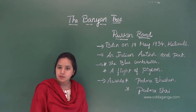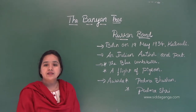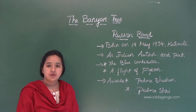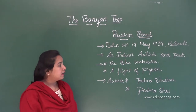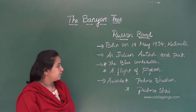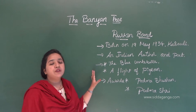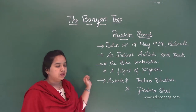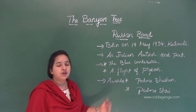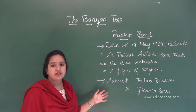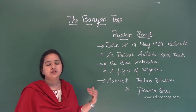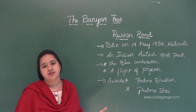Here I have written on the board. Ruskin Bond was born on 19th of May 1934 in Kasoli. He is an Indian author and poet. Here are some of his famous works: The Blue Umbrella and A Flight of Pigeon. And not only these two — there are so many other works he has contributed towards English literature.